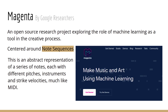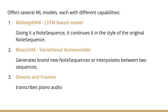My project focuses on using Magenta, which is an open-source research project by Google researchers. In Magenta, everything is centered around note sequences. Note sequences are simple abstract low-level representations of a series of notes which we collectively call music. They contain information about different notes, their pitches, type of instruments used, strike velocities, and they are a type of MIDI files.